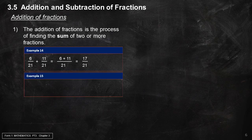Example 15: 5 over 18 plus 4 over 9. Upscale 4 over 9 to 8 over 18. Then add the numerators: 5 plus 8. The final result equals 13 over 18.